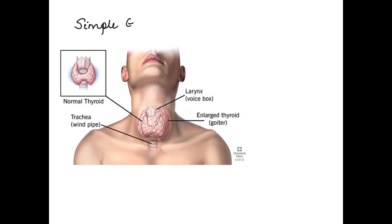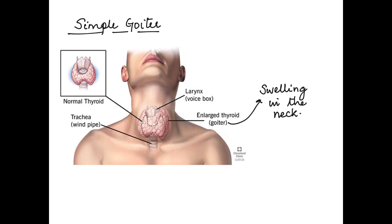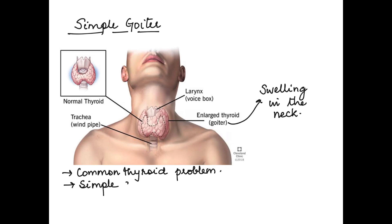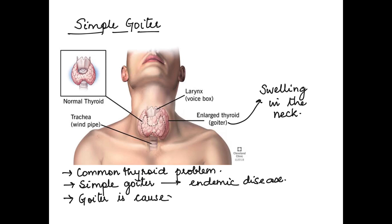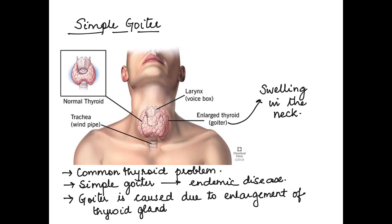In this video I'm going to talk about simple goiter. Goiter in general means swelling in front of the throat or in the neck region. It is one of the most common problems associated with the thyroid gland. It's an endemic disease, meaning it is restricted to a group of people in a particular area who lack iodine in their diet. Because of this lack of iodine, the thyroid gland starts to enlarge, seen as swelling in the neck — that is called goiter or simple goiter.